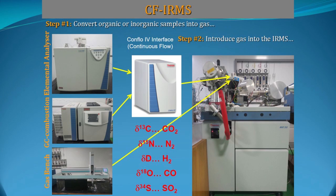In our institute we have a continuous flow isotope ratio mass spectrometer, which is a gas source mass spectrometer. This means we require gaseous samples, but in the field we collect either solid samples or liquid samples like water. To produce gas we use peripheral parts like elemental analyzer, GC combustion or GC IsoLink, and gas bench. Through these peripheral parts we produce different gases like CO2, nitrogen, hydrogen, and carbon monoxide.